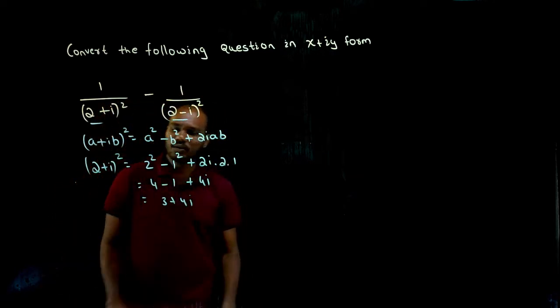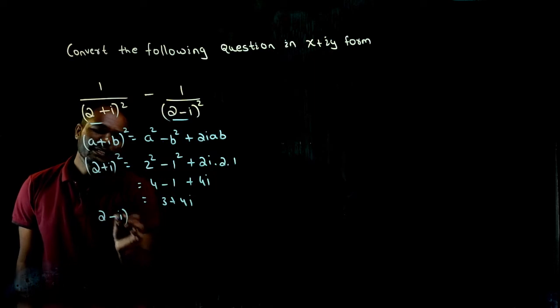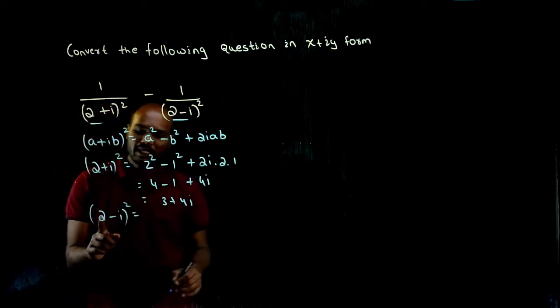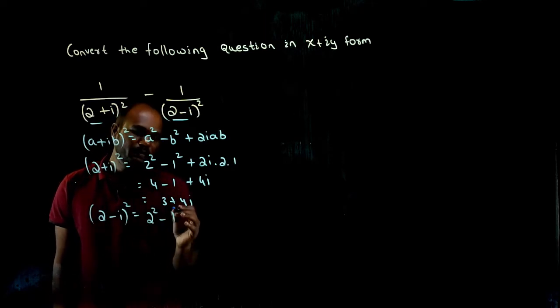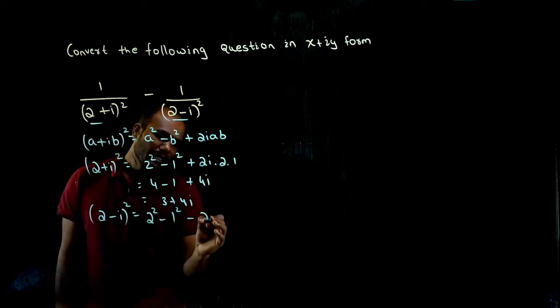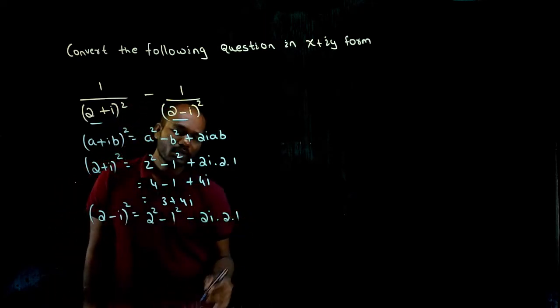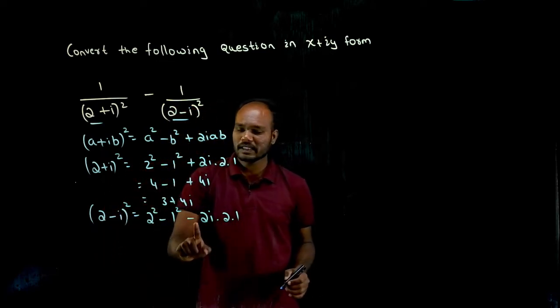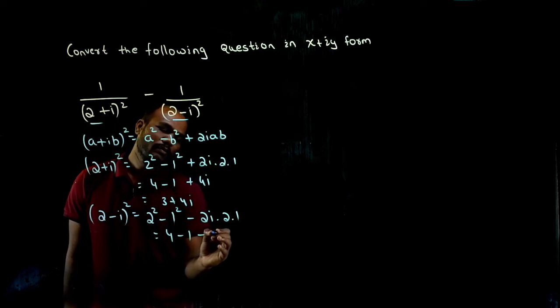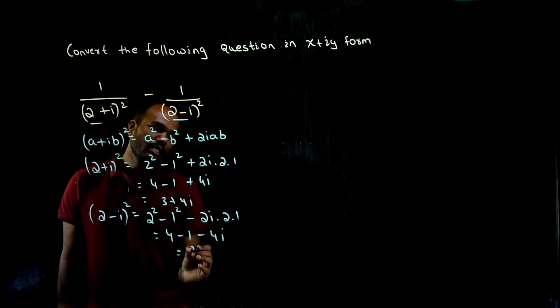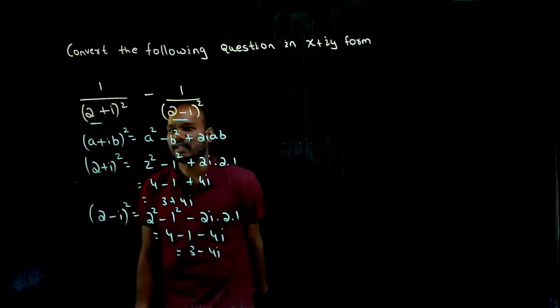In the same way 2 minus i whole square is nothing but a plus ib whole square. That will become a square minus b square minus 2iab. Only the difference is instead of plus we'll take negative. So 2 square is 4 minus 1 minus 4i. So 3 minus 4i is what we get.